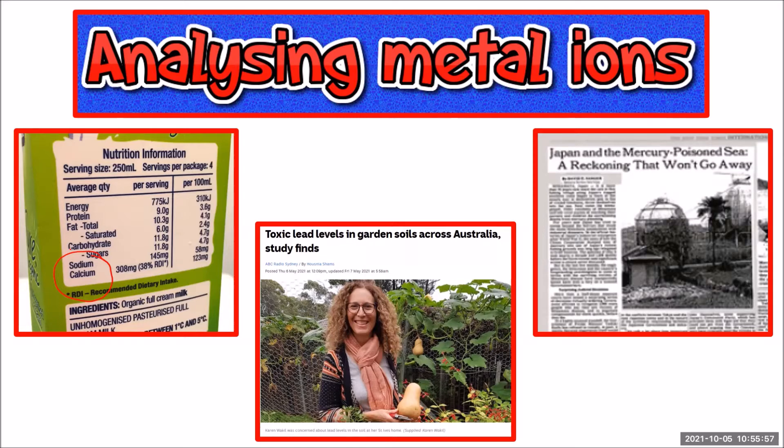This is particularly useful if you're analyzing soil samples or water samples for the presence of heavy metals like lead or mercury. We can see here a news article about lead levels in garden soils and also mercury poisoning in the sea. Salts of these metals are generally insoluble in water, so they tend to accumulate in the body. They can't be eliminated by the kidneys. The compounds are quite soluble in fats and tend to accumulate in fatty tissue like the myelin sheath on your nerves in your brain, so it's quite concerning.